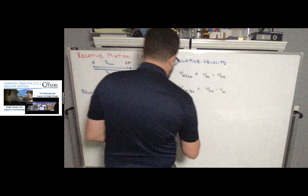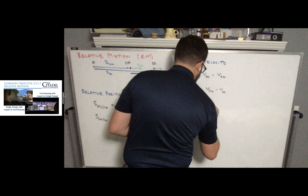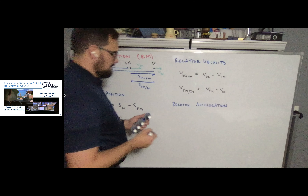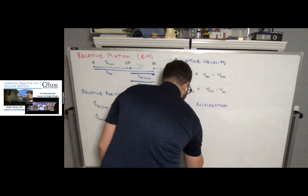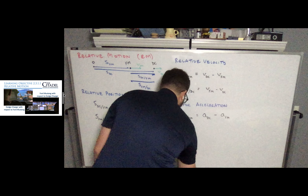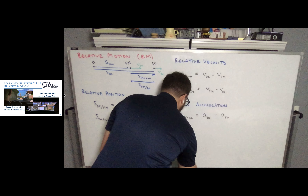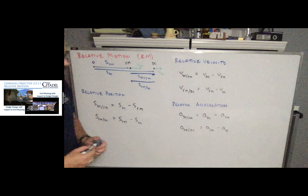We can also have relative acceleration. Admittedly, this is where my example falls apart, because we don't really experience changing acceleration throughout the car chase — most of the time they're accelerating or decelerating at the same rate, so relative acceleration is typically around zero. But the notation is the same: take the derivative with respect to time of the velocity equations. The acceleration of the Dodge Charger with respect to the Ford Mustang equals the acceleration of the Dodge Charger minus the acceleration of the Ford Mustang, and likewise flipped for the other perspective.